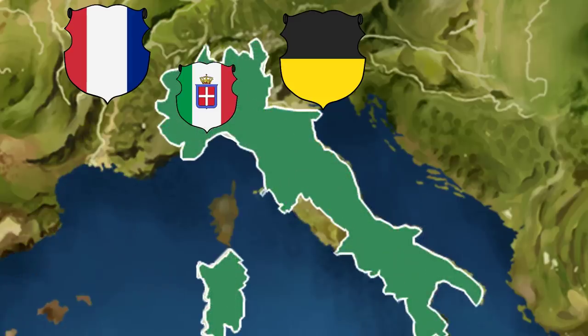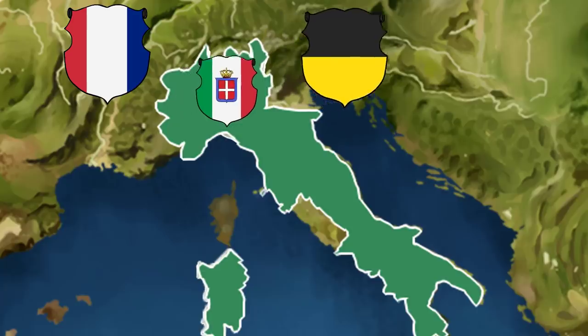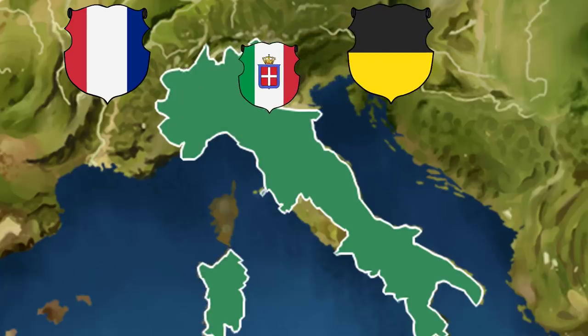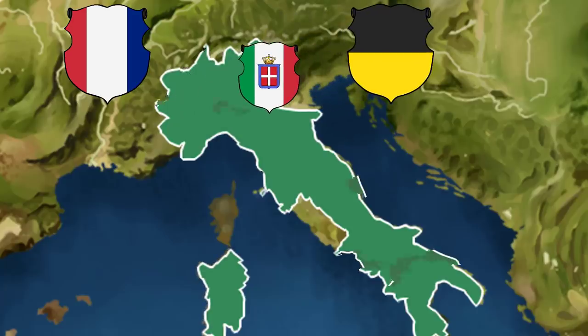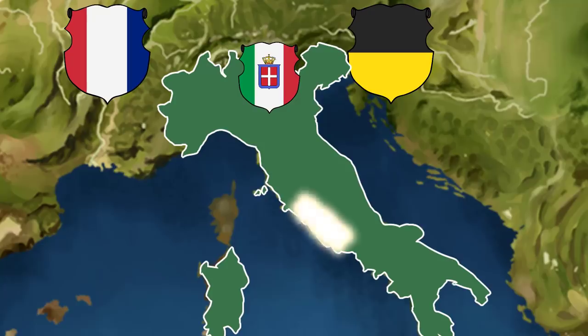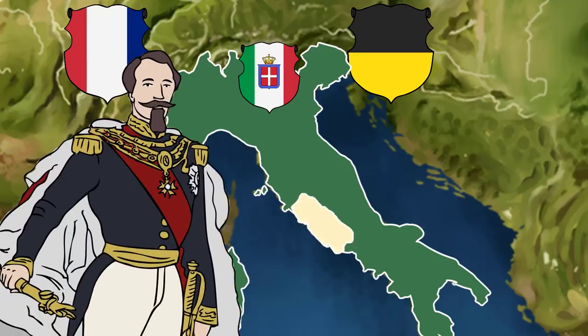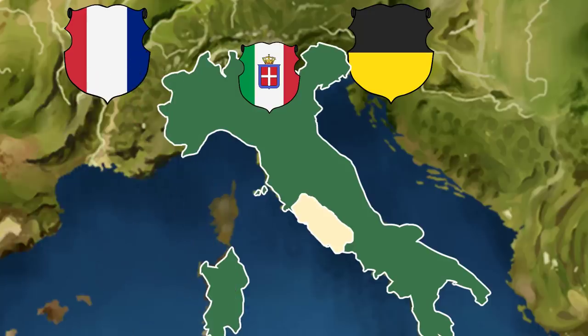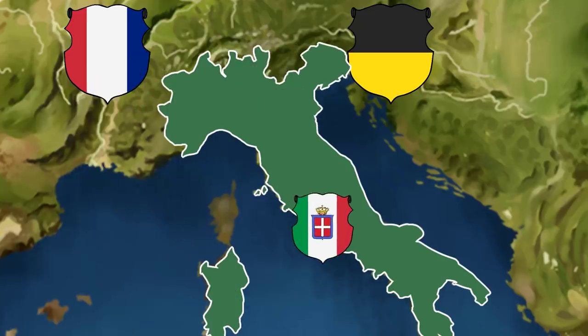Six years later, following the conclusion of the Third and Final War of Italian Independence — which was part of the Austro-Prussian War — Venice was seized from the Austrians and the provinces of Italy were unified under one government. But the Papal State was still guarded by Napoleon III. After Napoleon lost to the Prussians during the Franco-Prussian War, France withdrew from Rome, and the capture of Rome in 1870 ensued, fully uniting Italy.